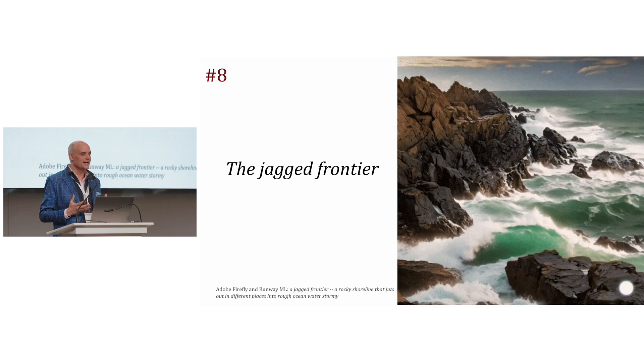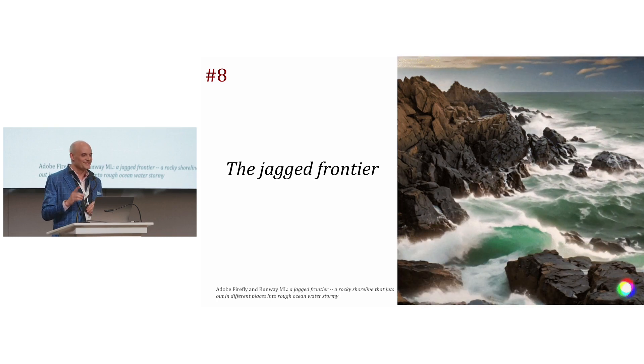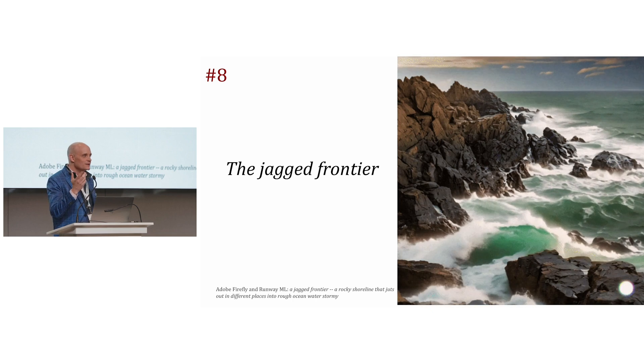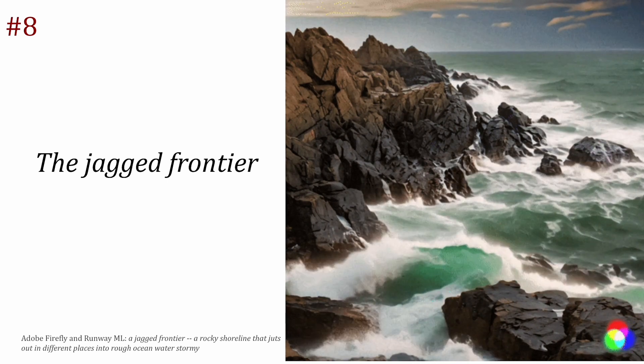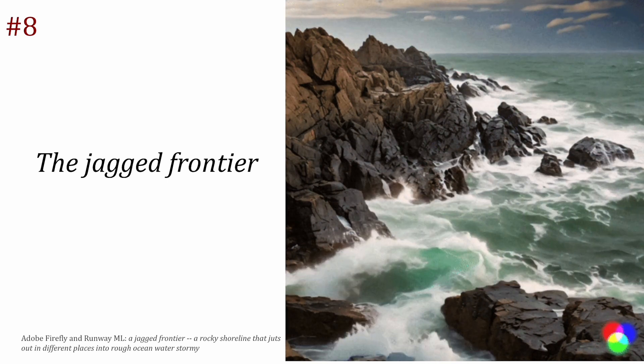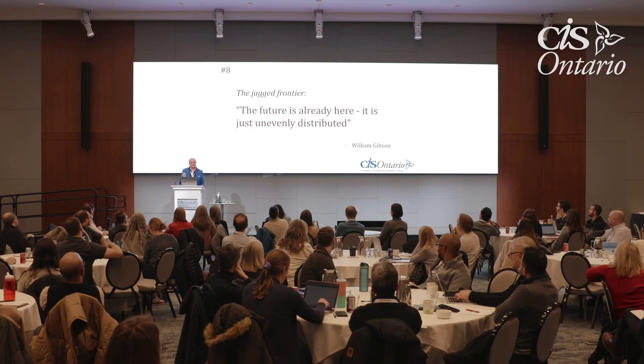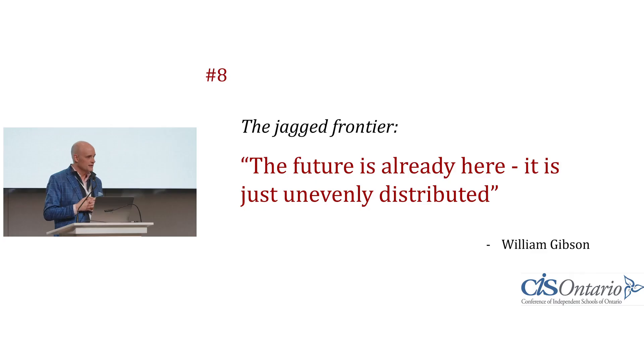This brings us to data point number 8: the jagged frontier. Note that RunwayML also hallucinated in animating the image — there's a rock in the bottom right corner that appears and drifts, fabricated from nothing. The quote to help conceive generative AI is: 'The future is already here, it's just unevenly distributed.' Generative AI and its transformative effects are here — we just may not see it in all quarters yet. If you're in Silicon Valley versus a rural village somewhere, implementation is at very different paces. We can't assume it's happening everywhere uniformly.